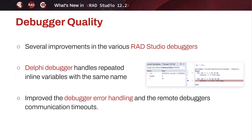Among the other quality improvements in 12.2, we've focused on debugger quality. There are several improvements in the various RAD Studio debuggers. The Delphi debugger now handles repeated inline variables with the same name, which was a problem before. We've also improved the debugger error handling and the remote debugger's communication timeouts.